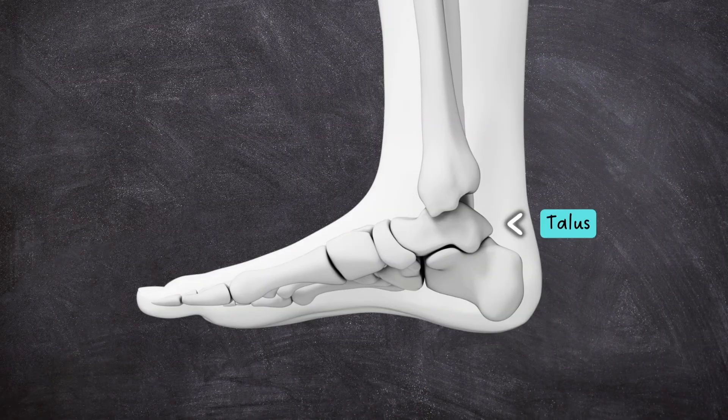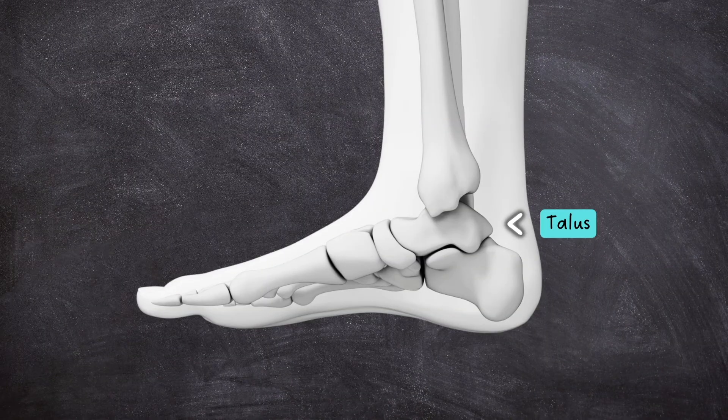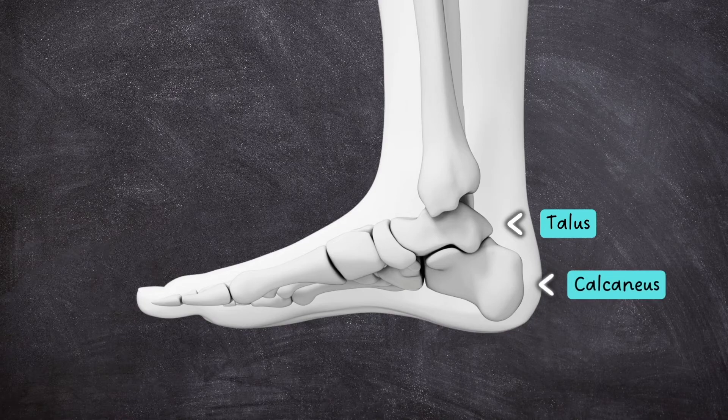Here it articulates with the talus, a small bone that sits between the tibia and fibula, and the calcaneus, or heel bone, beneath.